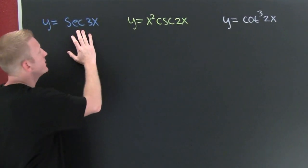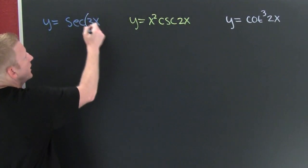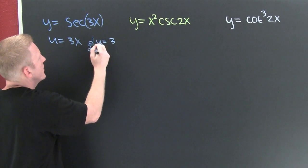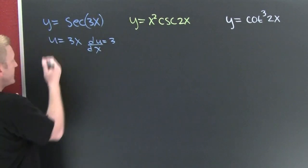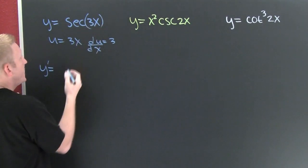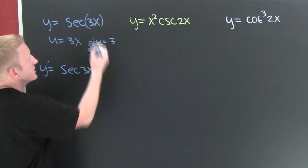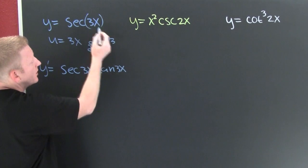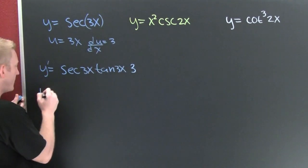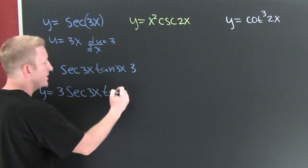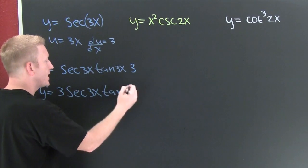I want to take the derivative of secant of 3x. Here, u equals 3x and du/dx equals 3. So y prime — the derivative of secant is secant times tangent — giving us secant of 3x times tangent of 3x, multiplied by the derivative of the argument, which is 3. Rewriting: y prime equals 3 times secant(3x) times tangent(3x), and at that point we'd be done.